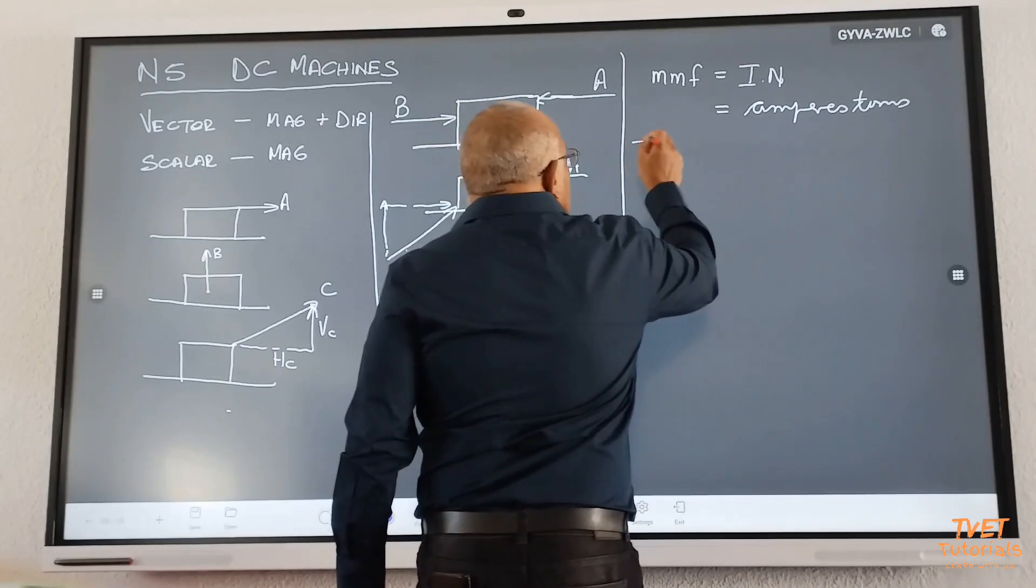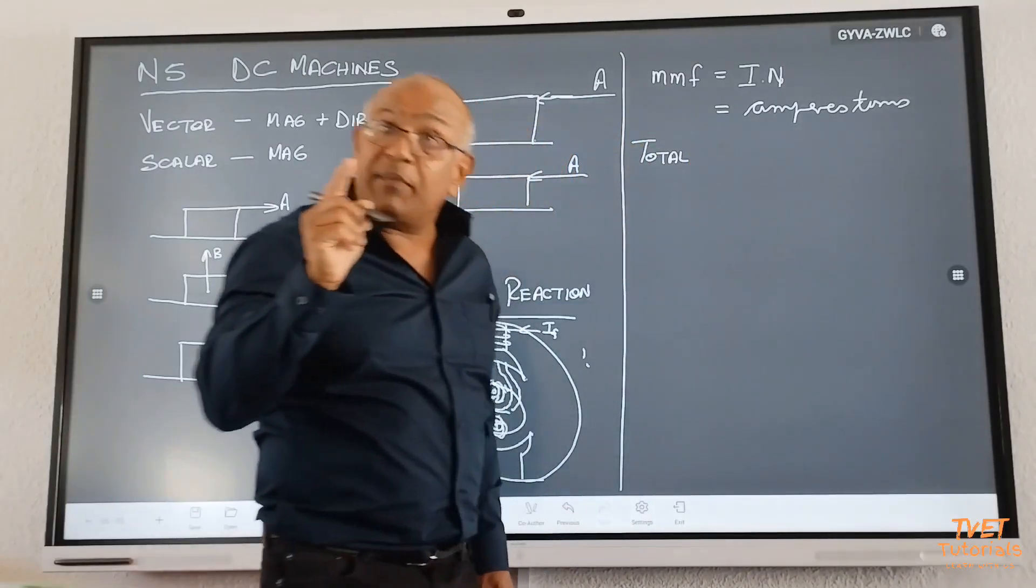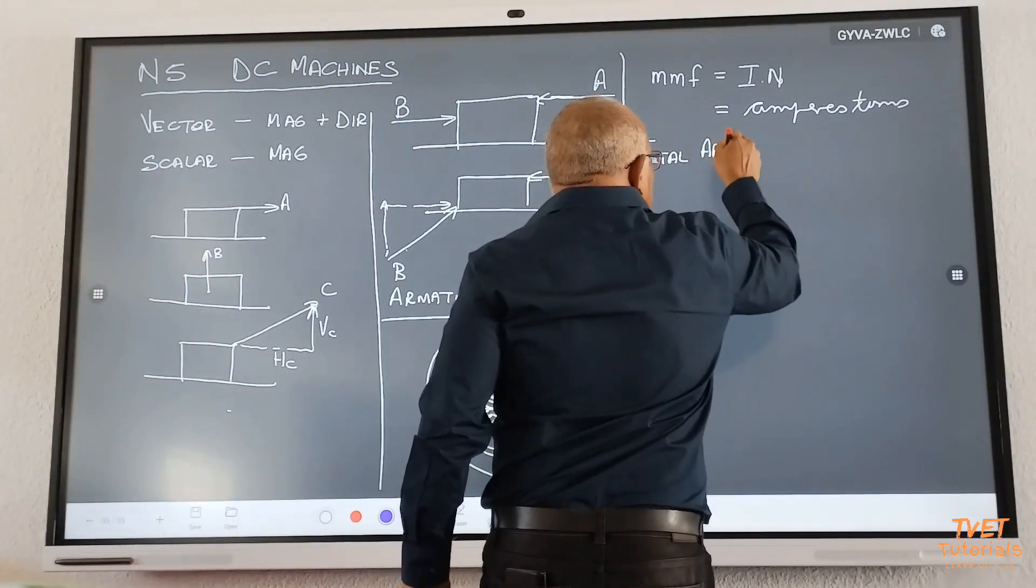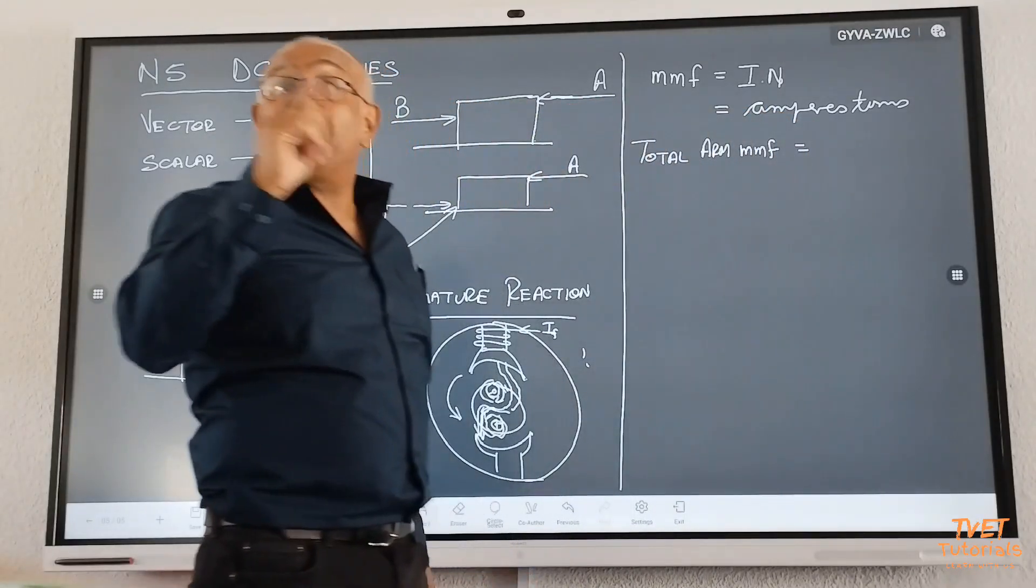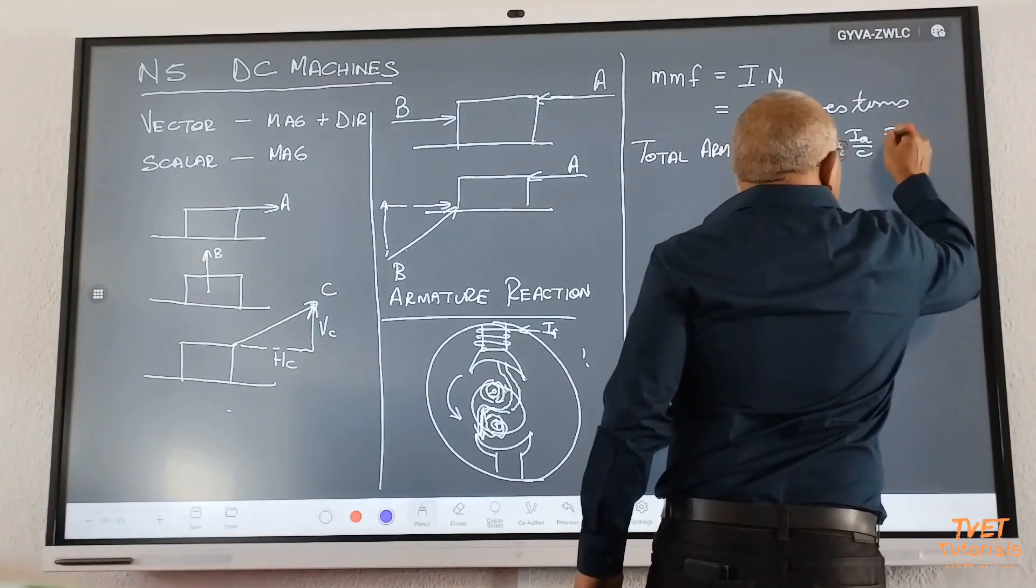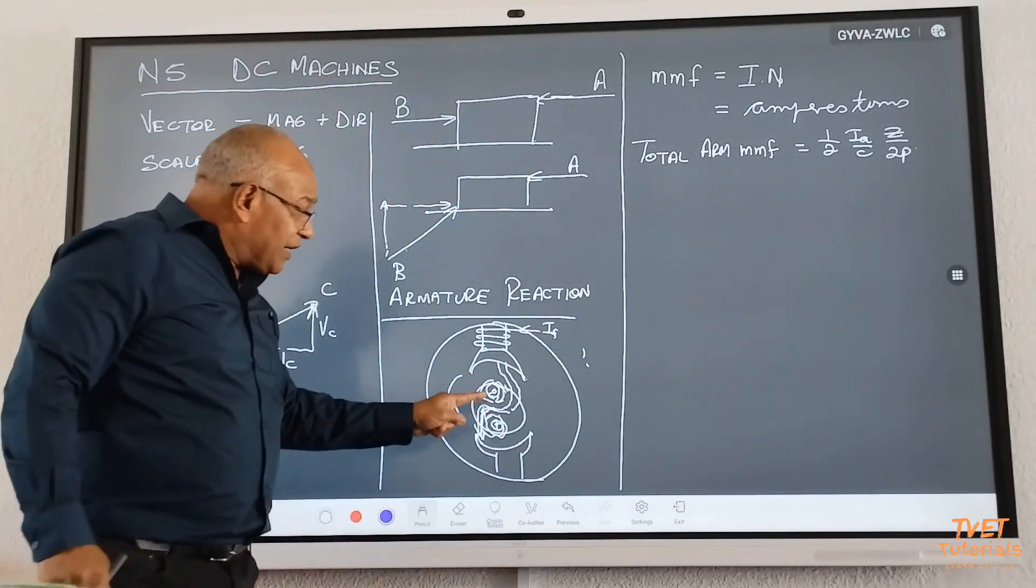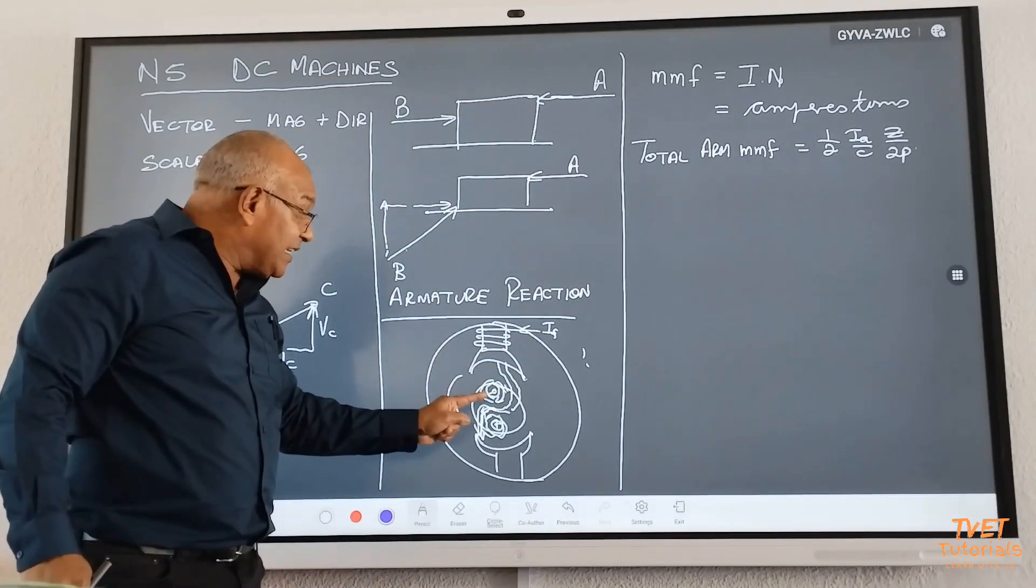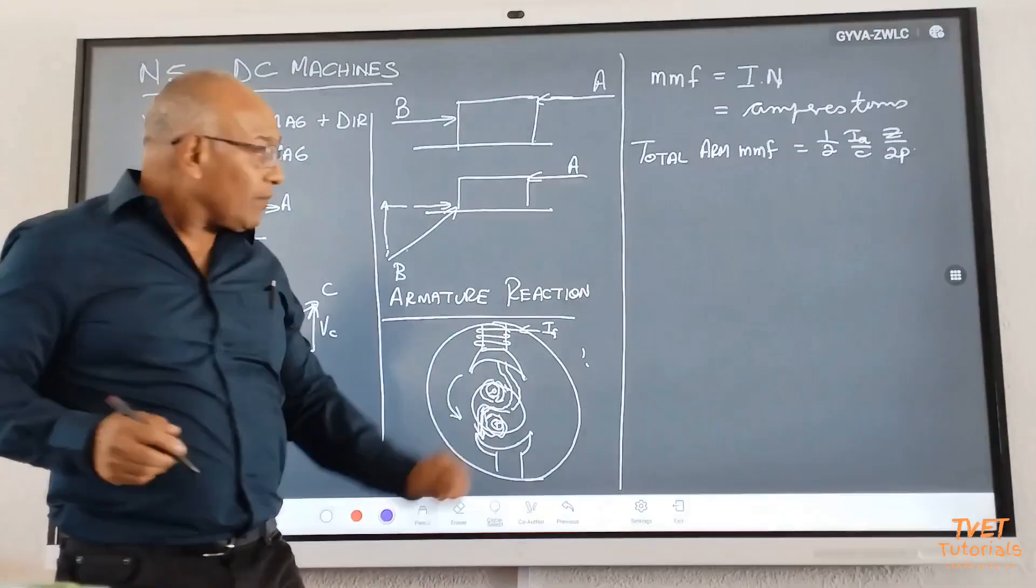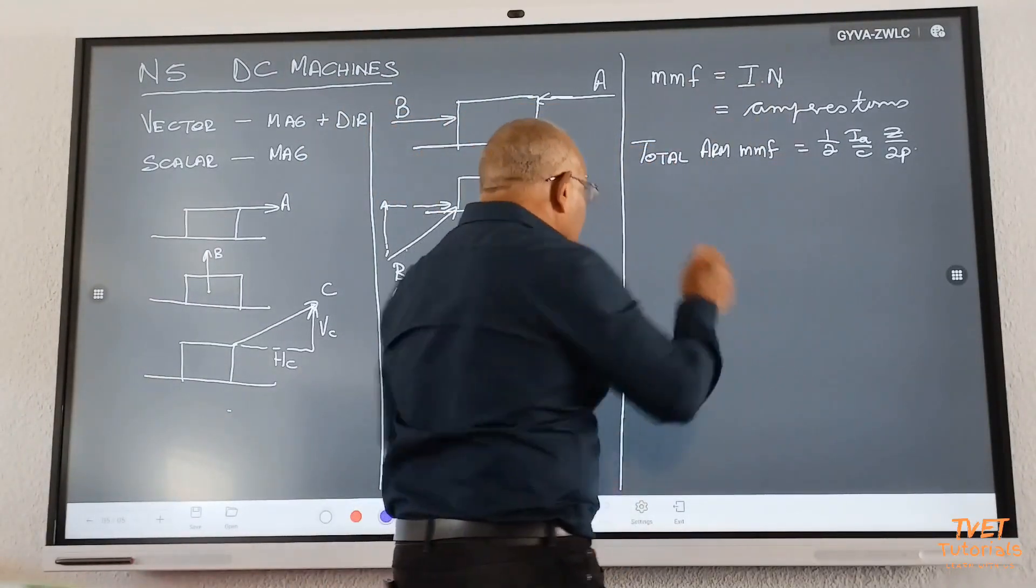So, therefore, for us to calculate the total armature MMF. Give me another name for MMF. Ampere turns. Ampere turns. So, total armature MMF. You see, I'm not using the concept ampere turns per pole for now. I'm using MMF. There's a formula which says, one over two, IA over C, Z over two P. That's the total. Now, of this armature, remember, it's the armature ampere turns, it's the armature, the secondary magnetic field that is going to oppose and distort the main one.